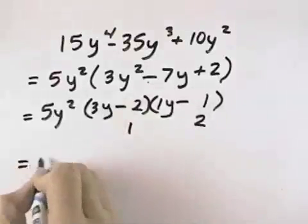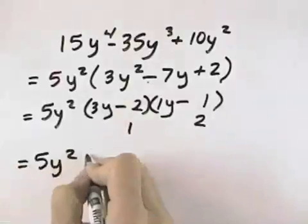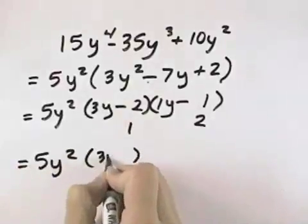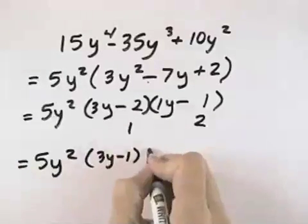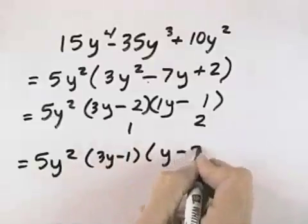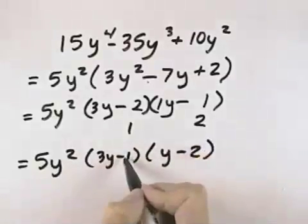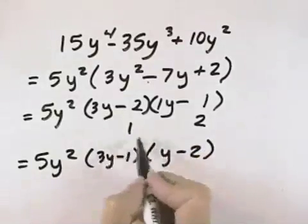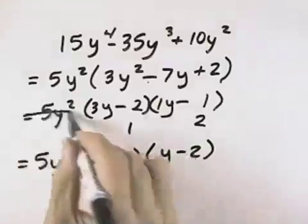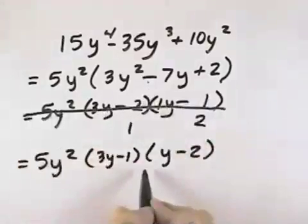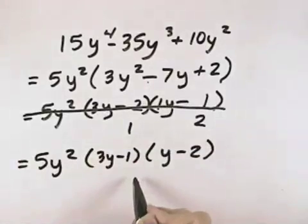So that means let's try reversing these, and instead having 3y minus the 1, and then 1y minus the 2. So that for an inner term, we get negative 1y, and outer term is negative 6y, and together that does give us the negative 7y, which means this is the factored form we want.